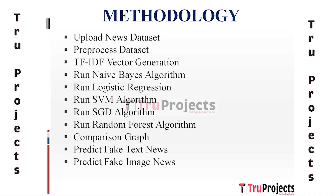The seventh module is Run SGD Algorithm. Stochastic Gradient Descent (SGD) is an optimization algorithm commonly used to train machine learning models. SGD is applied to train a model for fake news prediction using the TF-IDF features. The eighth module is Run Random Forest Algorithm. Random Forest is an ensemble learning technique that combines multiple decision trees to make more accurate predictions, and the pre-processed TF-IDF transformed dataset is used to train this model.